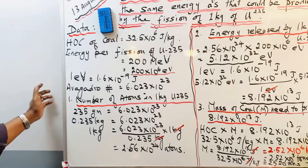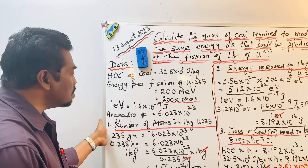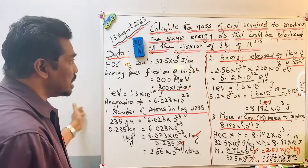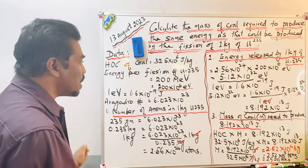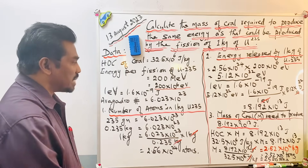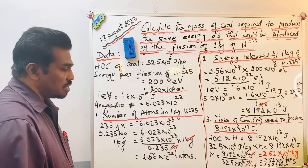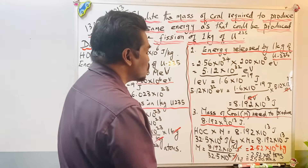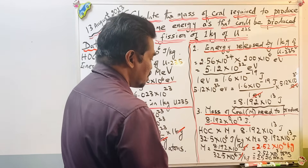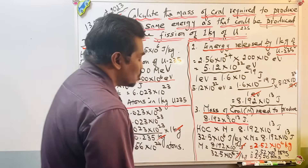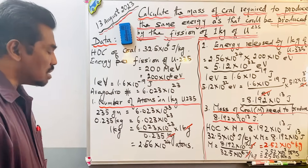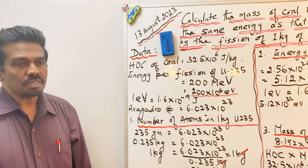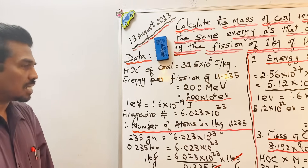To summarize, the problem was split into 3 parts: the first part calculated the number of atoms in 1 kilogram of uranium-235; the second part calculated the energy released by 1 kilogram of uranium-235; and finally we calculated the mass of coal needed to produce that energy. The answer is 2,520 tons of coal. Thank you for watching — the next video is coming soon.